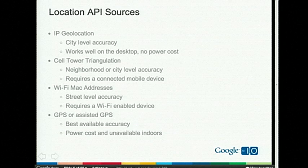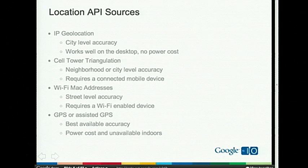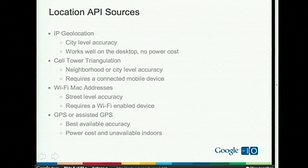Similarly, there's a location API built off Wi-Fi MAC addresses, which gives even better accuracy — down to the street level, 50 to 100 meter accuracy. The device, whether a laptop or cell phone, issues a wireless network scan, looks at all access points within range, takes the unique MAC addresses of each, and estimates the position based on that. It's almost as good as GPS, but works indoors and doesn't have nearly the same power cost that GPS has.